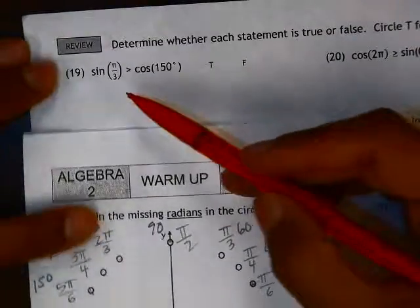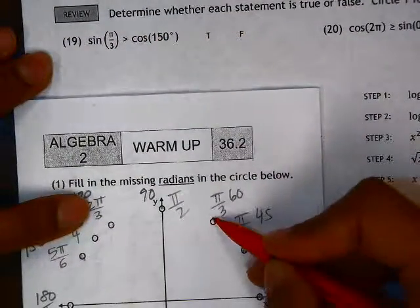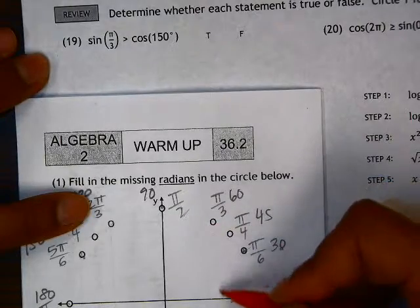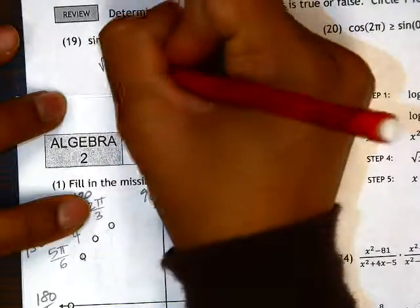So sine pi over 3, let's just look at what it's equivalent to. Sine pi over 3 is the longest and it's positive, so positive root 3 over 2.